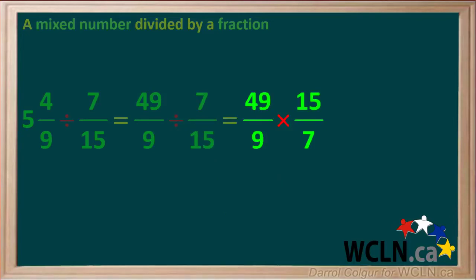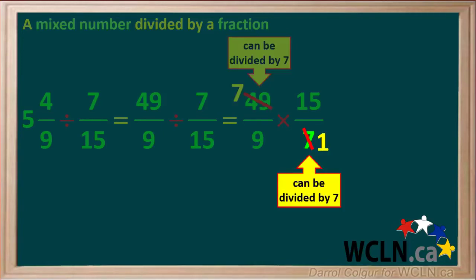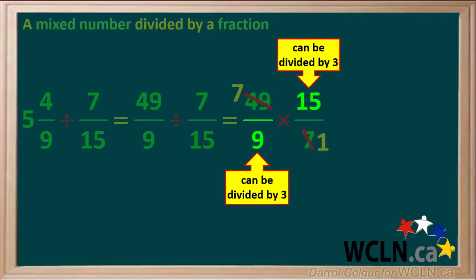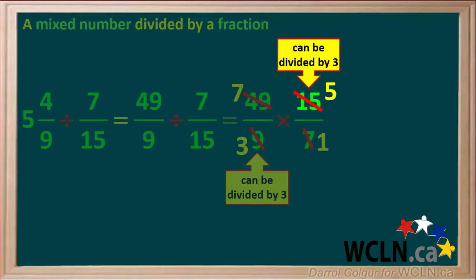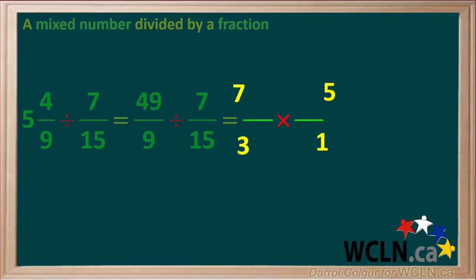So the question now is 49 over 9 times 15 over 7. Notice the diagonal numbers 49 and 7 can both be divided by 7: 49 divided by 7 is 7, and 7 divided by 7 equals 1. Also notice the other diagonals 9 and 15 can both be divided by 3: 9 divided by 3 gives us 3, and 15 divided by 3 is 5. So we're left with 7 over 3 times 5 over 1.